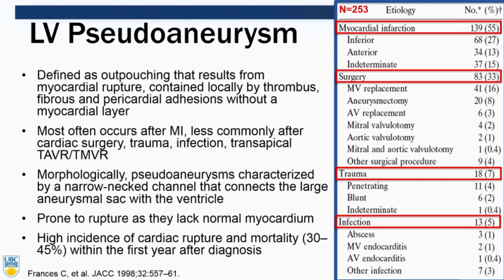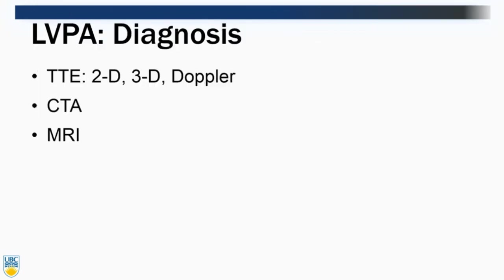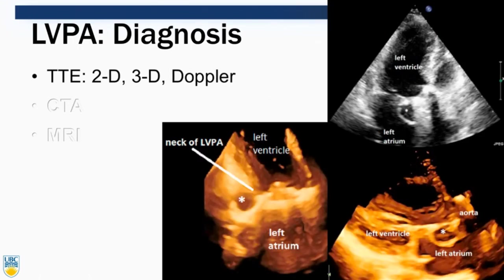Morphologically, a pseudoaneurysm is characterized by a narrow neck channel that connects a large aneurysmal sac to the ventricle. Because they lack normal myocardium, there is a high risk of rupture — the incidence of rupture mortality is 45% within the first year.